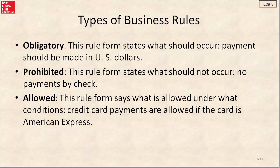We're going to talk about three main types of business rules. There's the obligatory rule that states what should occur. For example, payment should be made in U.S. dollars. There's the prohibited rule that states what should not occur — for example, this business does not accept payments by check.